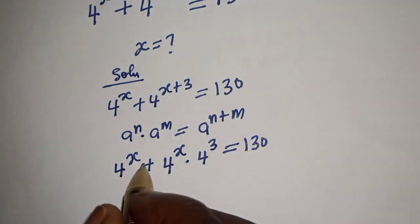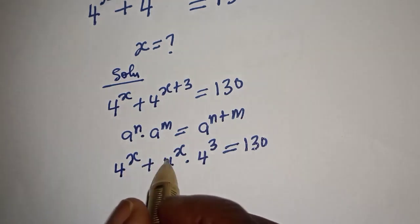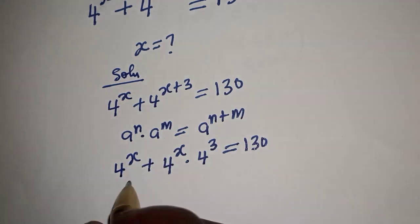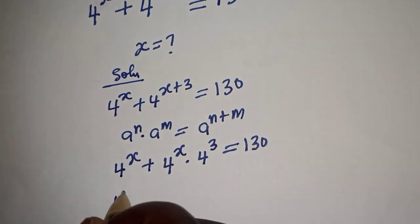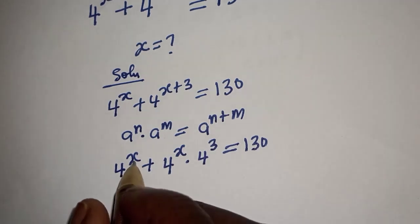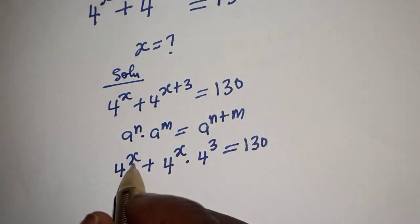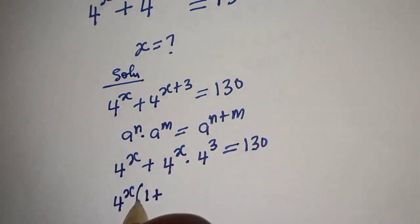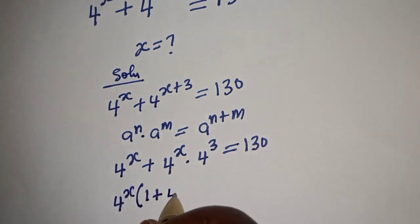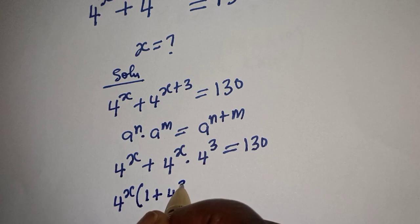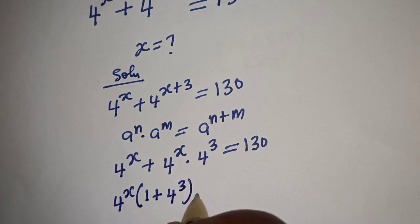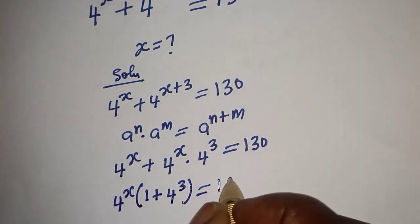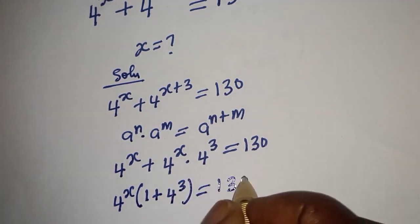If you look at the left hand side, 4 raised to power s is common — let's bring it out. So we get 4 raised to power s, bracket 1 plus 4 raised to power 3, is equal to 130.